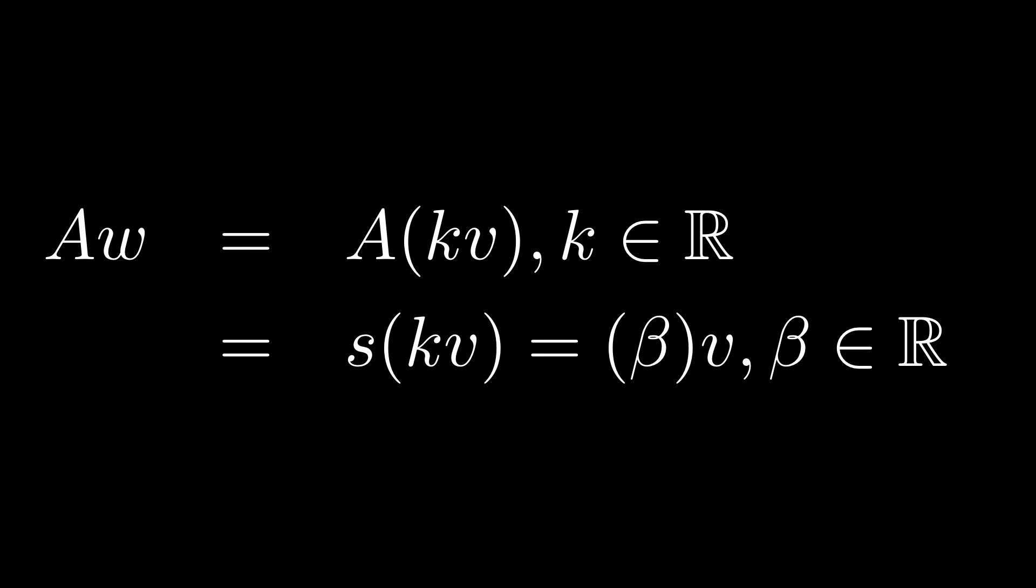If w lies along an eigenvector of the system A, then we can rewrite w as a constant times that eigenvector, where that constant is some real number. But from the definition of eigenvalue and eigenvector, we know that if s is the eigenvalue associated with the eigenvector v, then we can rewrite the multiplication of A times v as s times v. We can then combine the two constants s, the eigenvalue, and the constant k into another constant beta, and we see that we get beta times v.